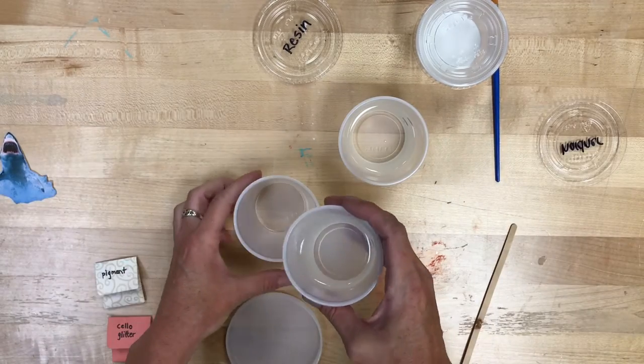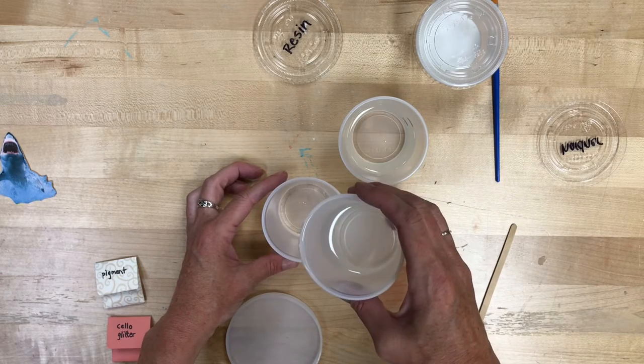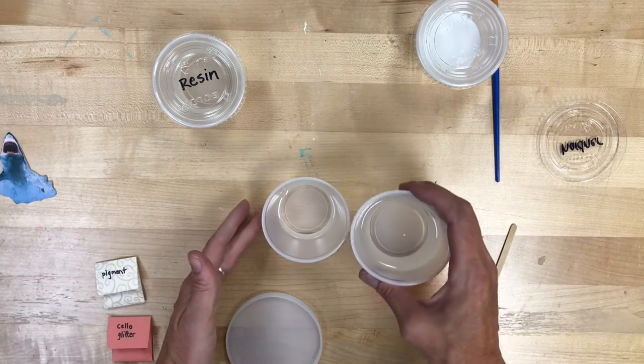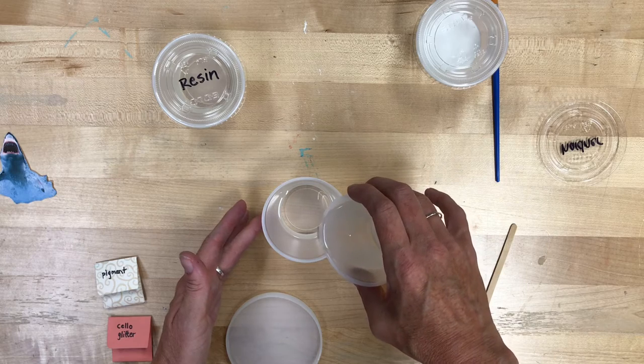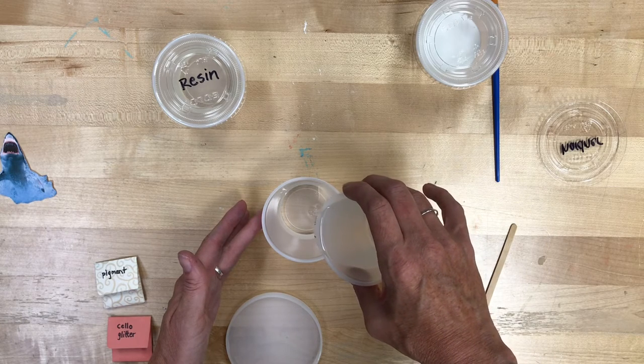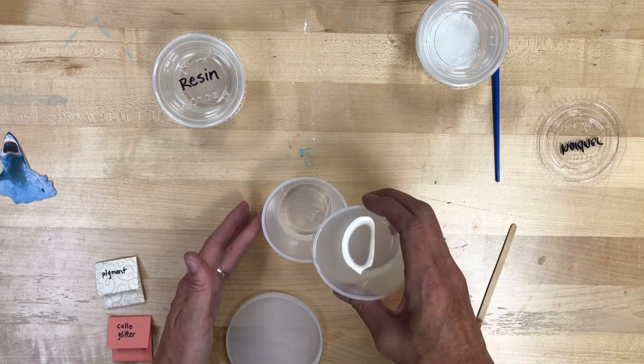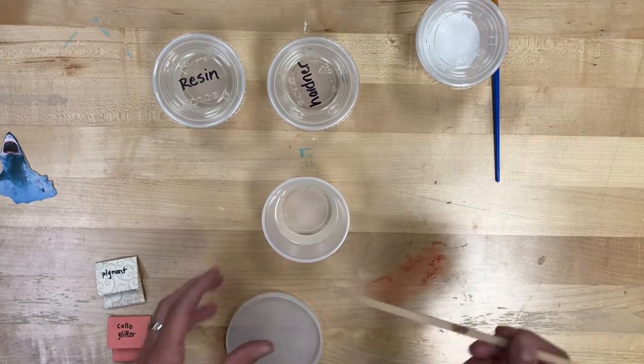So we're going to start with our resin. Use about half of it, and then you're going to use the same amount of the hardener. Pour that in there, and then we're just going to stir that together for about a minute or two.